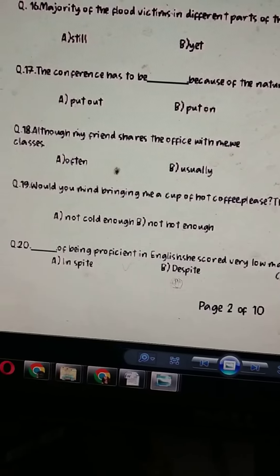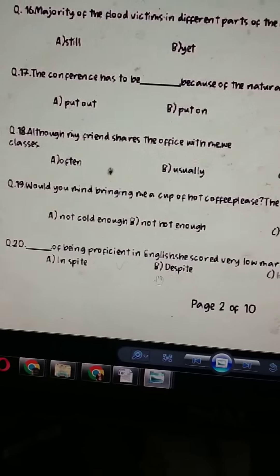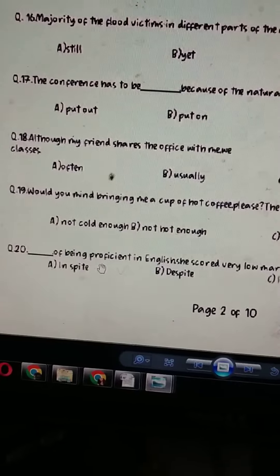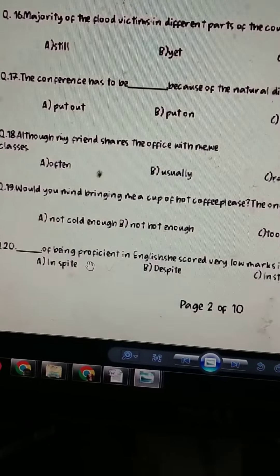Dash of being proficient in English has got very low. Theek hai — spite of. Because despite of: 'of' to hone se raha, despite ki meaning is 'in spite of' hoti hai. The correct answer hoga option.